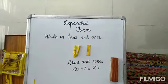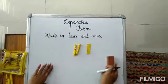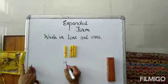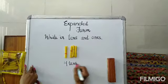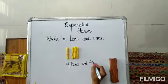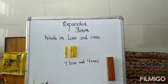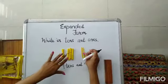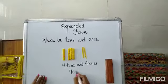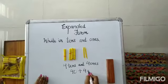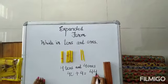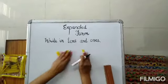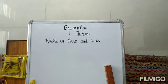It's very easy. Now again see — if I am giving you 4 bundles of 10, that is 4 tens, and 4 ones. So it's very easy now. I hope you all must have understood it very well. Thank you.